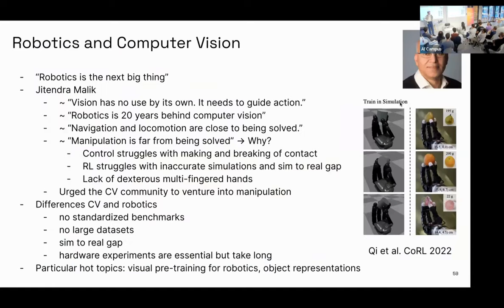There was also significant talk about robotics. Jitendra Malik gave an inspiring talk saying the vision community now needs to help the robotics community, especially with manipulation — a particularly hard and interesting problem. It was inspiring to see researchers of that track record steering the community toward manipulation.